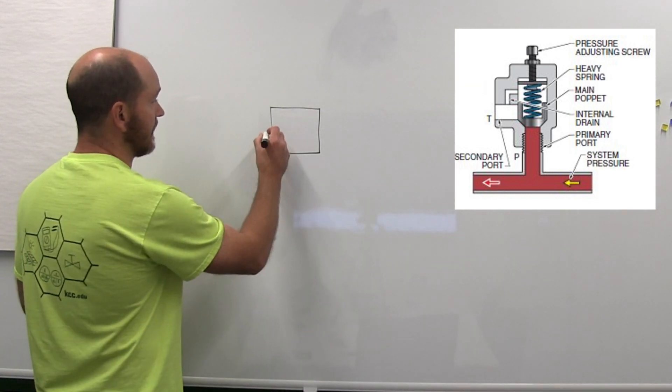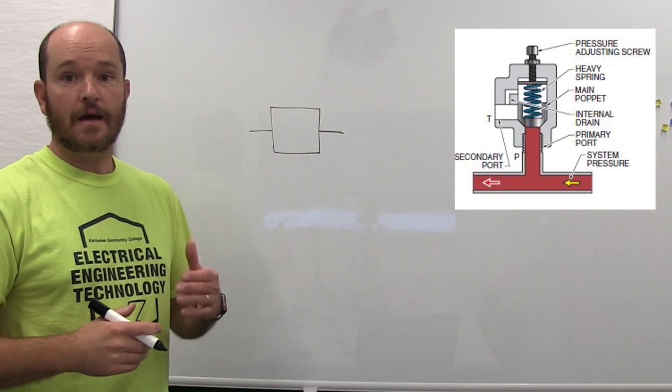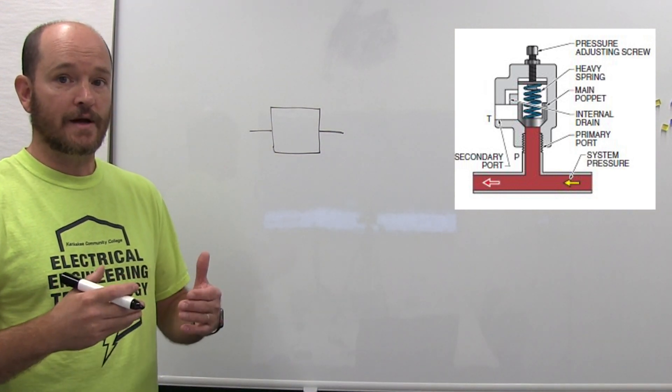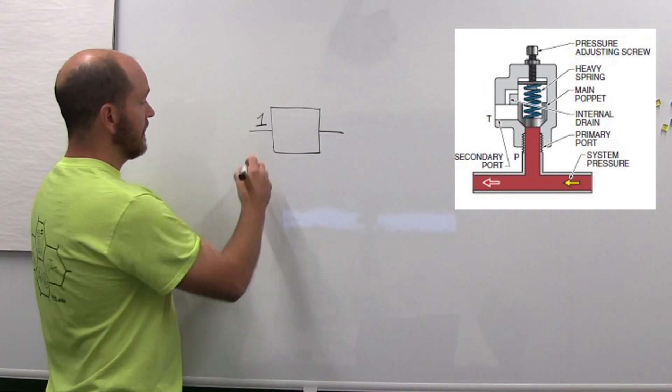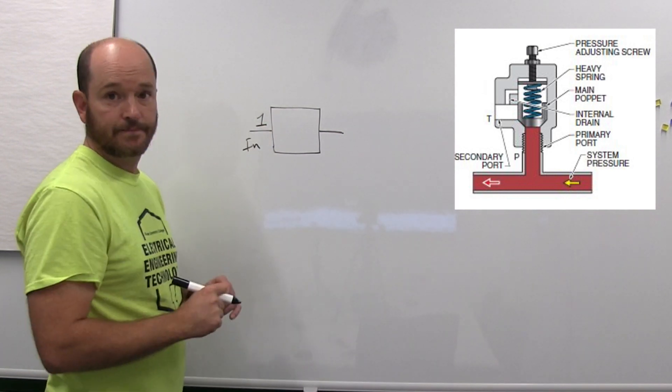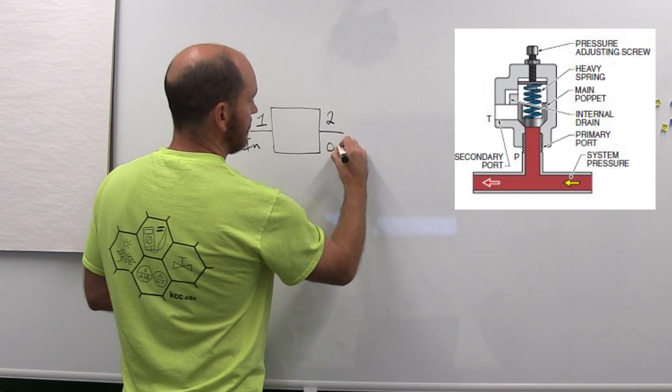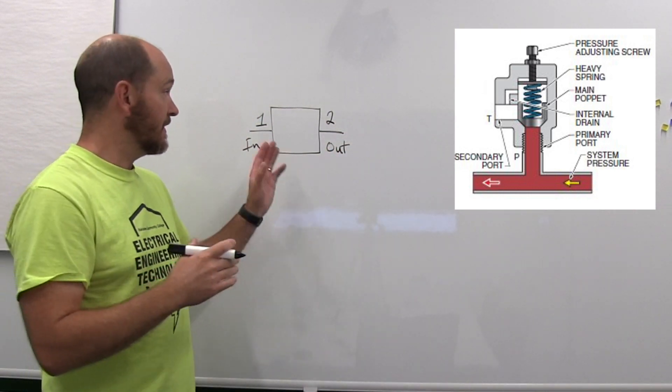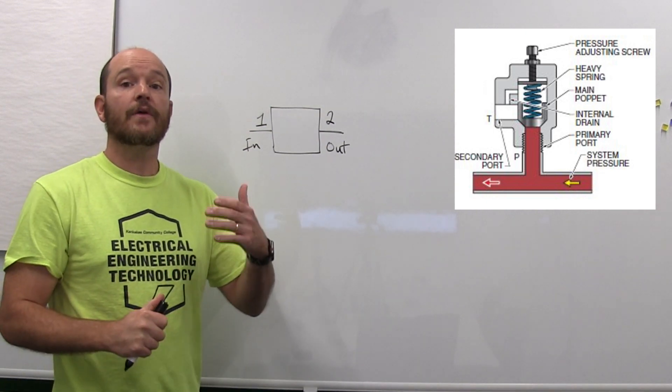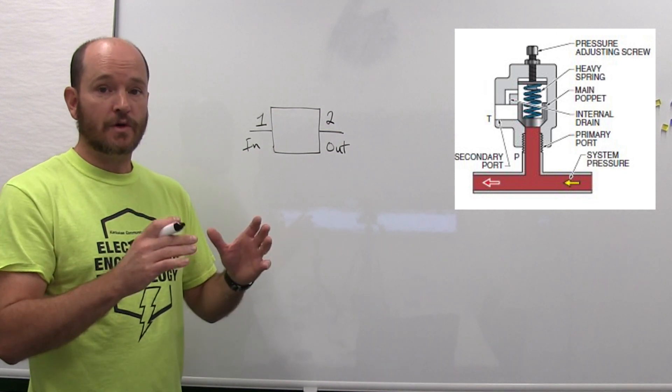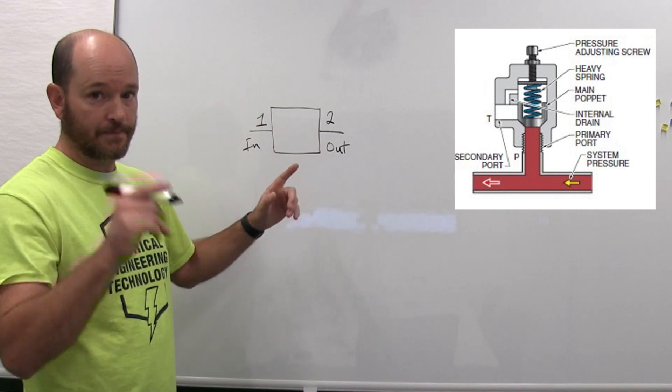The next thing are the ports. Depending on the manufacturer there can be a couple of different ways these are identified. Sometimes your input is referred to as one, your output is referred to as two. This isn't set in stone—they can have different names, sometimes they may even be labeled with letters.